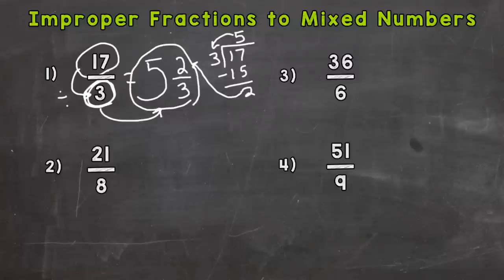So again, the division problem, 17 divided by 3. The whole number, we got 5. The remainder, we got this 2 right here. And we keep the denominator the same.